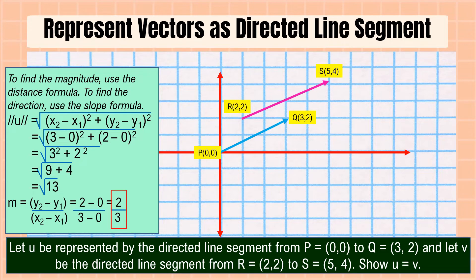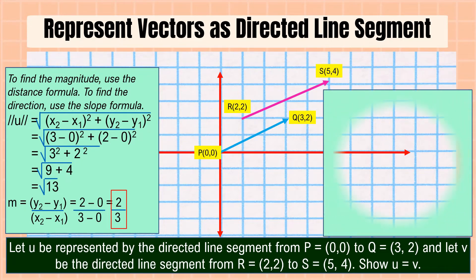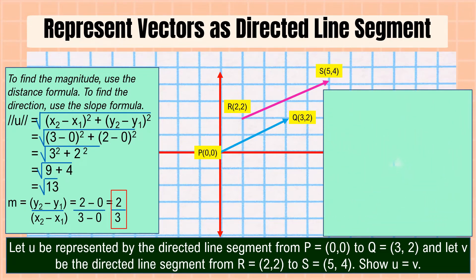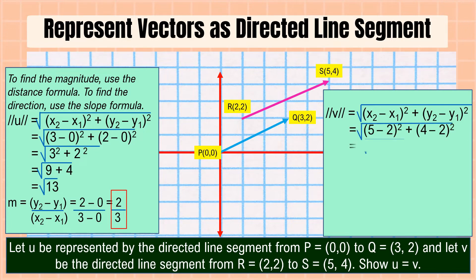Next, we're going to solve the magnitude and direction of directed line segment v. We substitute the points into our formula. Therefore, the magnitude of directed line segment v is the square root of 13.